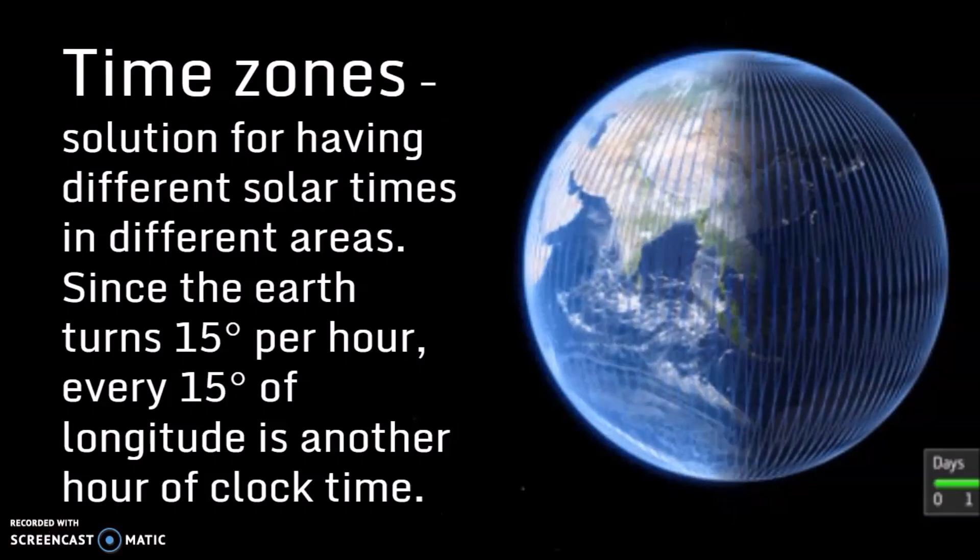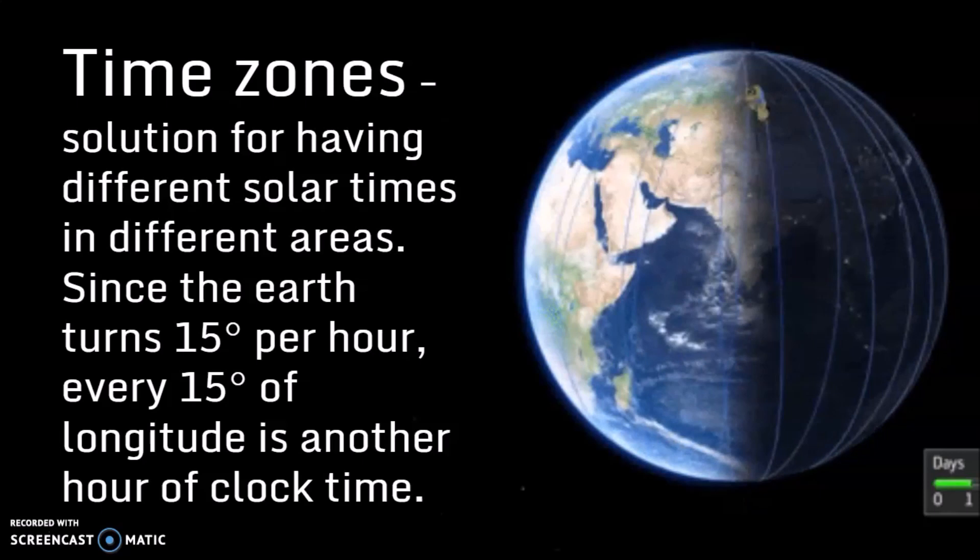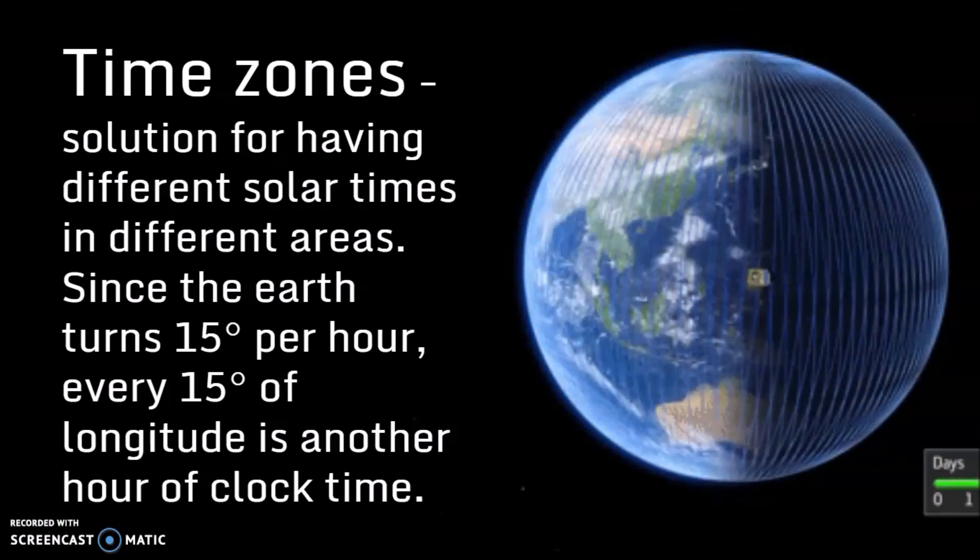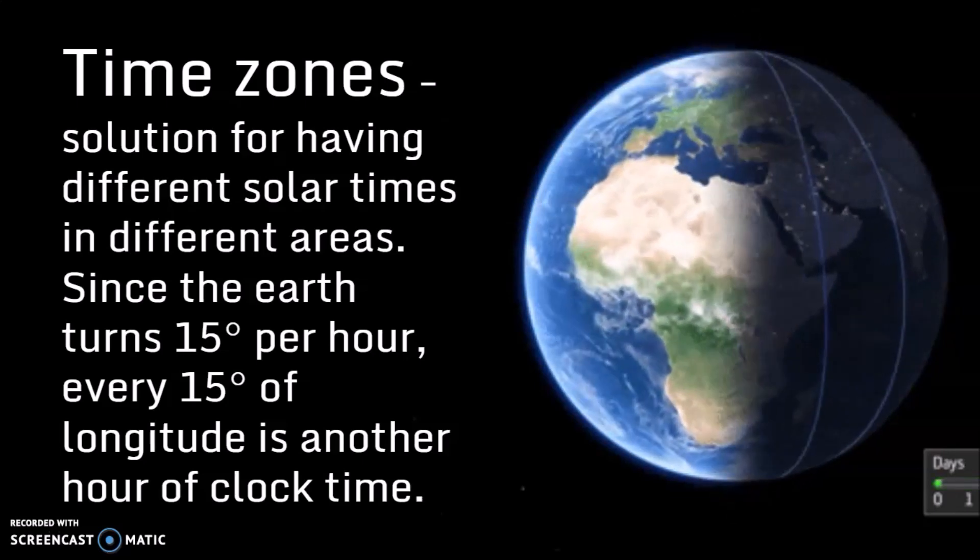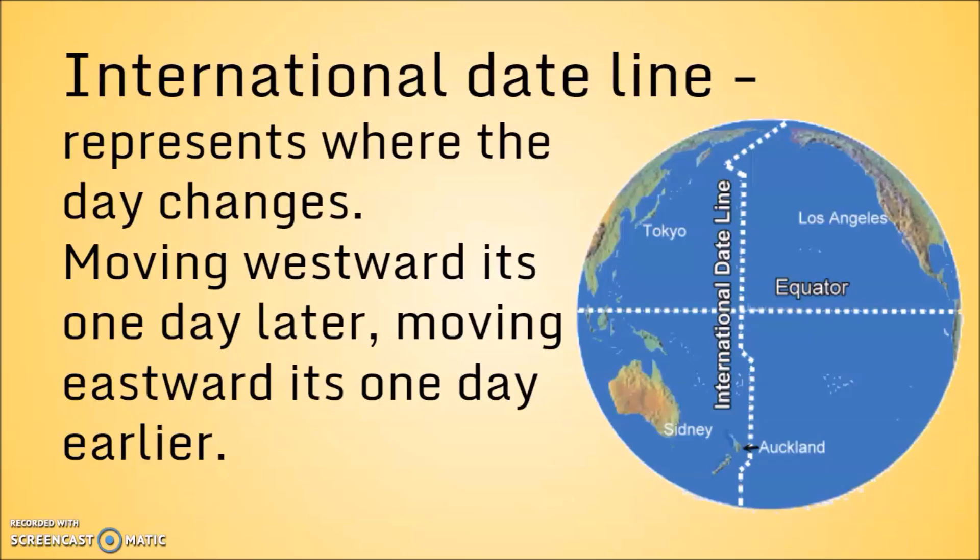Time zones were created as a solution to the problem that different areas on Earth are going to see the Sun at different times of the day. Since the Earth turns 15 degrees per hour, every 15 degrees of longitude is another hour of clock time.